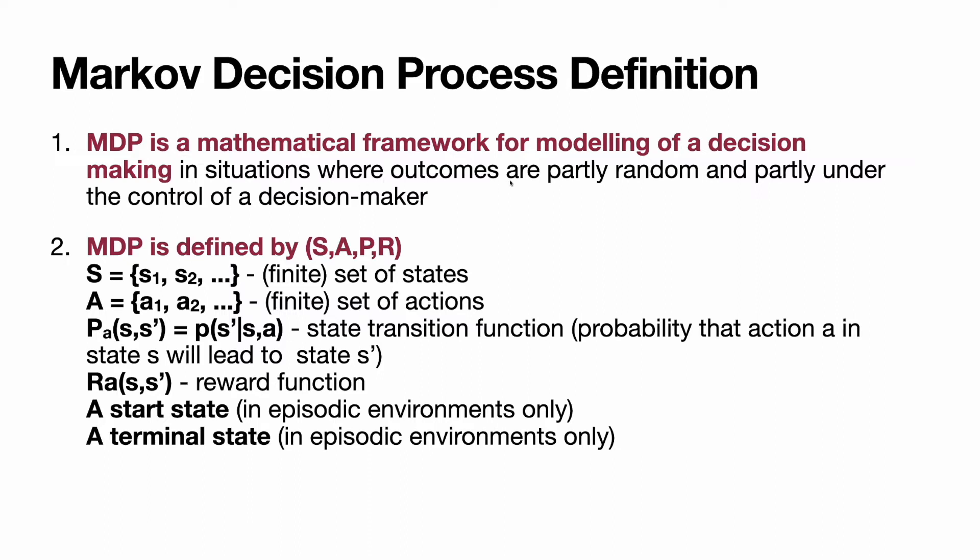Situations where outcomes are partly random. It means the results of our actions are defined not only by agent, but also by some external forces on which we don't have any power to rule. So we encode this uncertainty in a transition function. The transition function is a probability that action A taken in state S will lead to expected state S'.